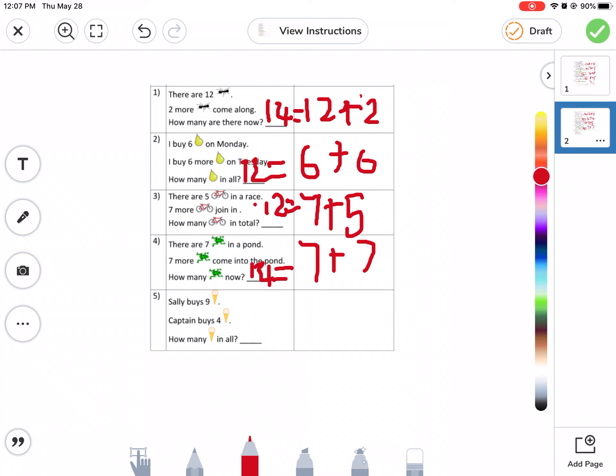Sally buys nine cupcakes. Captain buys four. How many? No. Okay, those are cupcakes. No. That is definitely not a nine. That is some nine. That is like a bit sick. Right. Not right. Okay. What is nine plus four?